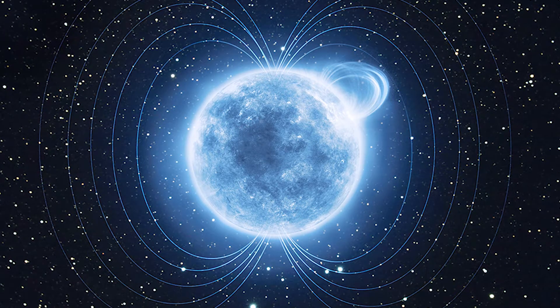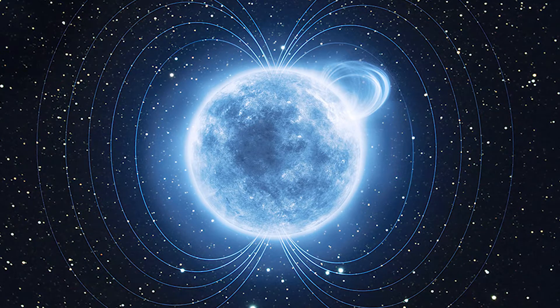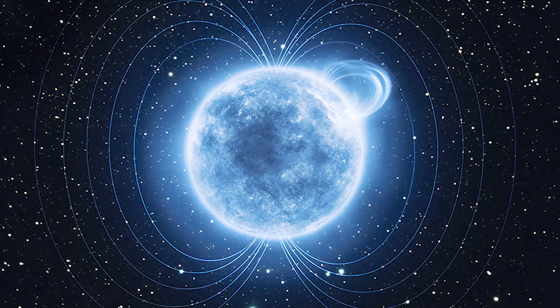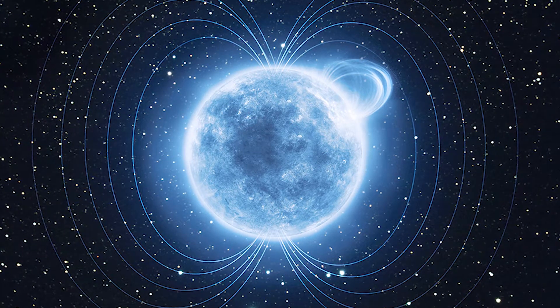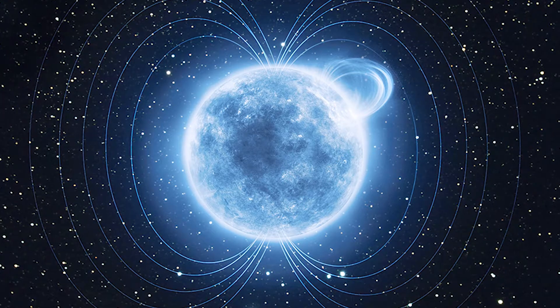Magnetars have extremely powerful magnetic fields, thousand times stronger than the average neutron star. It is powerful enough to distort the shape of atoms and have a slightly higher rotation rate.